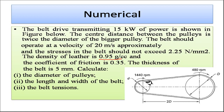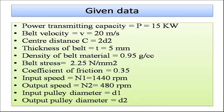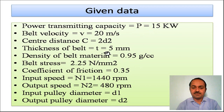We are asked to calculate the diameter of pulleys — both small and large — the total length of the belt, and the width of the belt. Only thickness is known to us. We also need to find the tensions in the belt. The total given data: power is 15 kilowatt, belt velocity is 20 meter per second, and center distance is also specified.